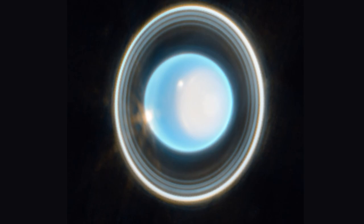The new Uranus image shows 11 of the planet's 13 known rings, some of which are so bright that they blend together somewhat.